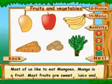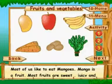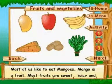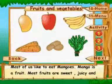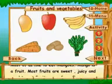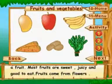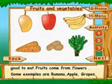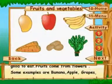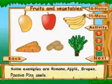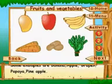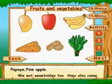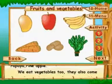Most of us like to eat mangoes. Mango is a fruit. Most fruits are sweet, juicy and good to eat. Fruits come from flowers. Some examples are banana, apple, grapes, papaya and pineapple.